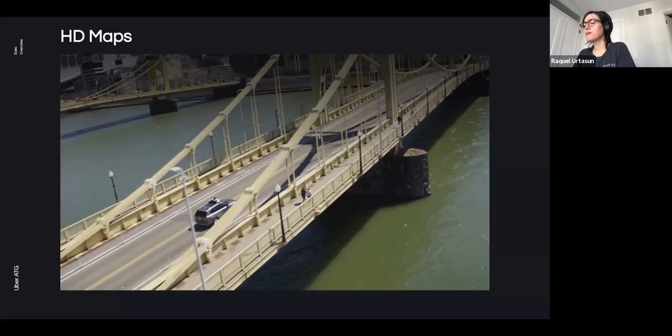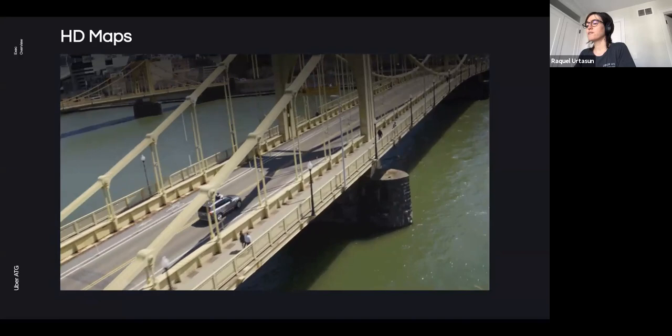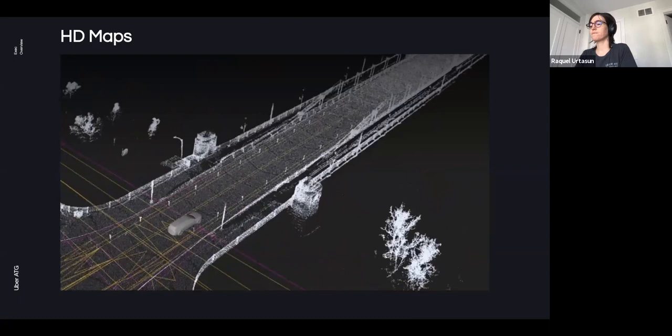Self-driving vehicles utilize high-definition maps, which contain both detailed geometry and semantic information about the environment. These are used for precise localization of the self-driving vehicle, as prior knowledge for the autonomy system and for simulation.